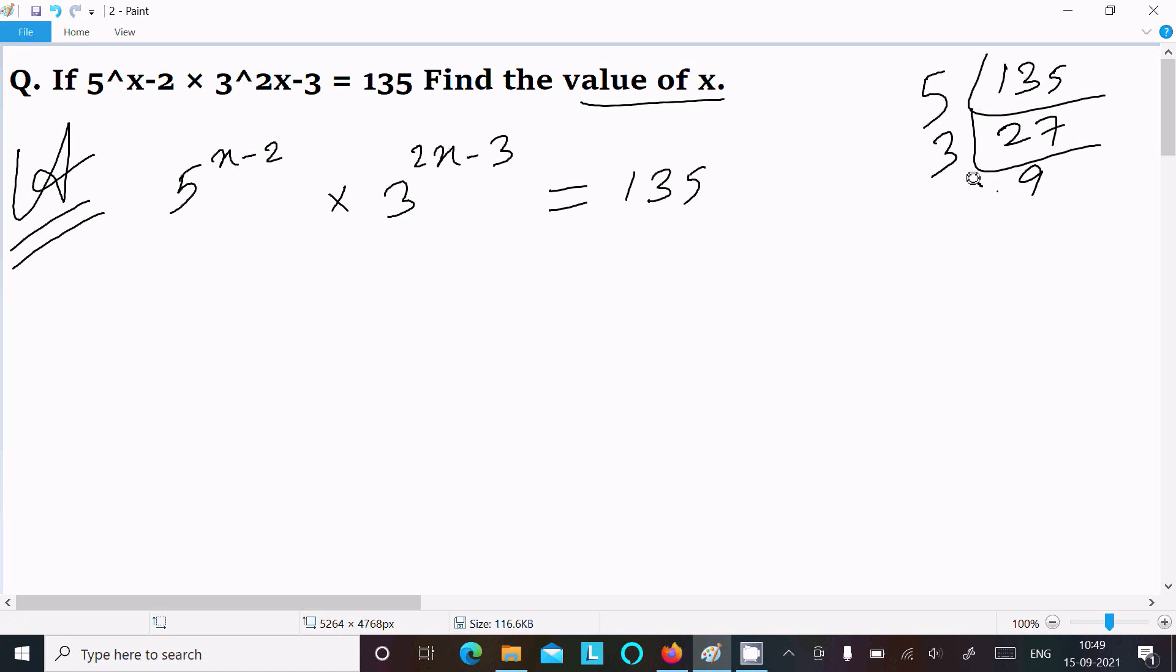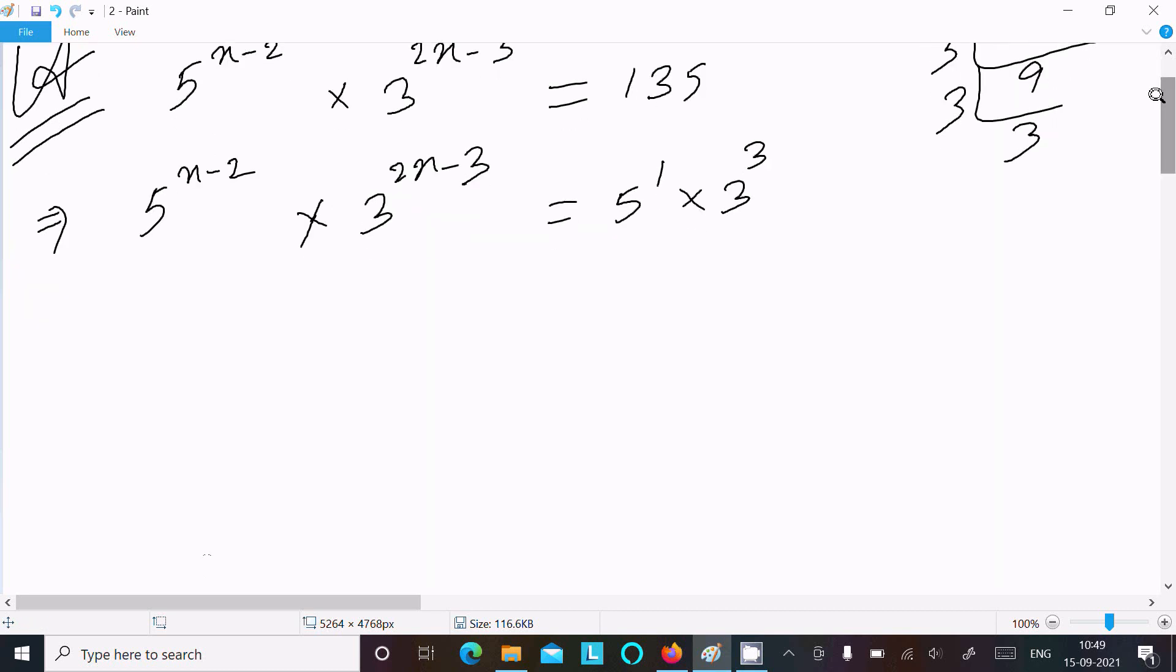Now we can write 5 to the x minus 2 times 3 to the 2x minus 3, and 135 we can write as 5 power 1 times 3 power 3. After that, equating the components.